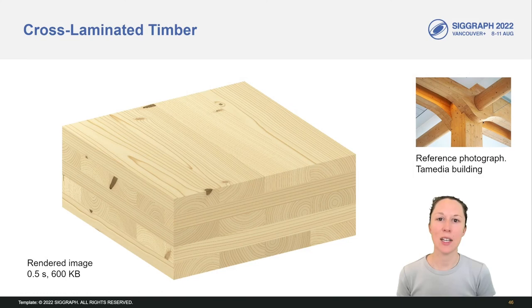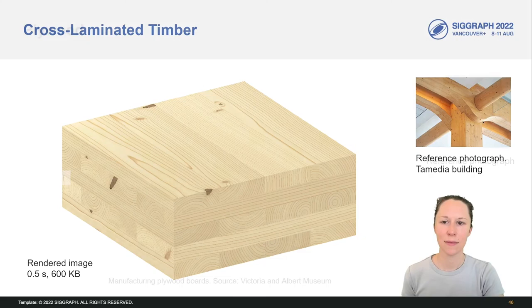This is an example of cross-laminated timber, which is a common modern building material consisting of wood planks that are glued together at alternating directions. We make this texture by using exactly the same procedure. We just modify the 3D texture coordinates of the input model by offset and rotation to achieve a tiling effect.